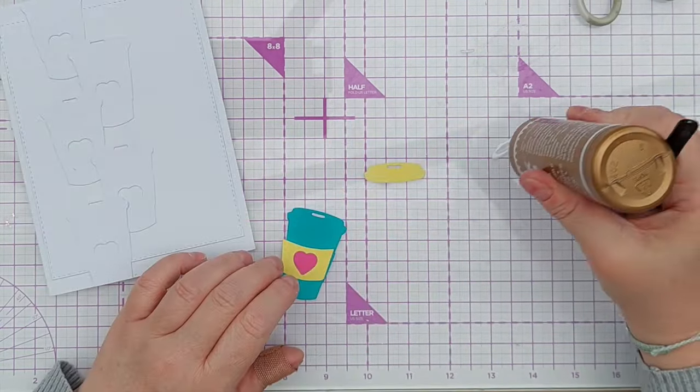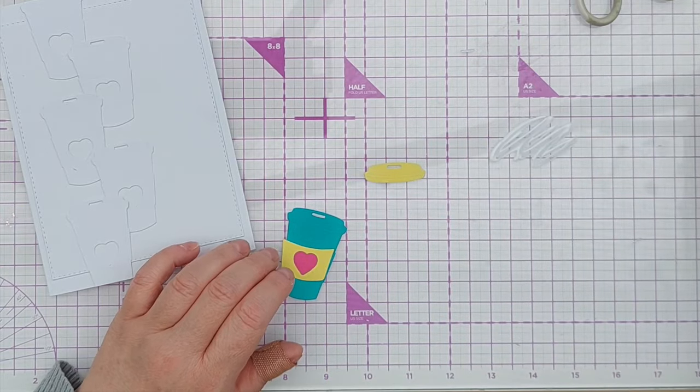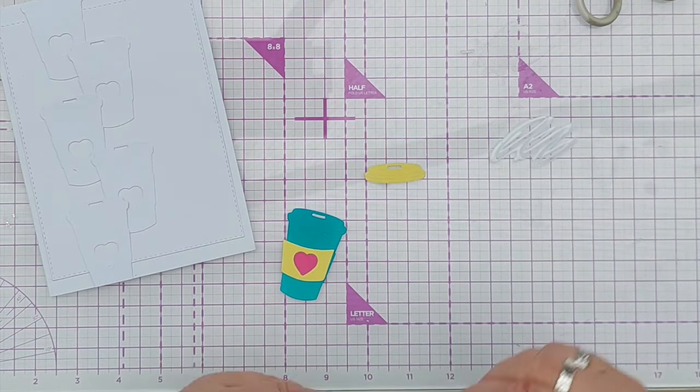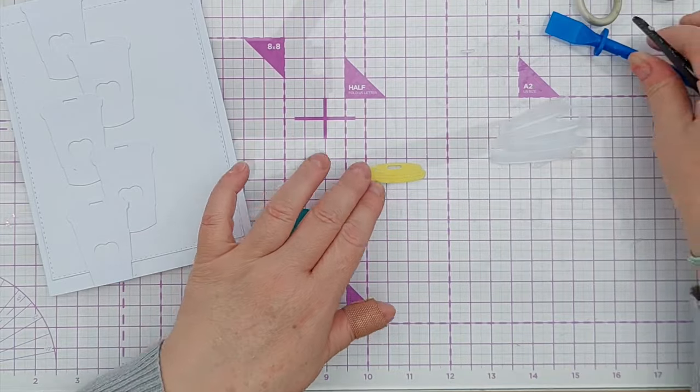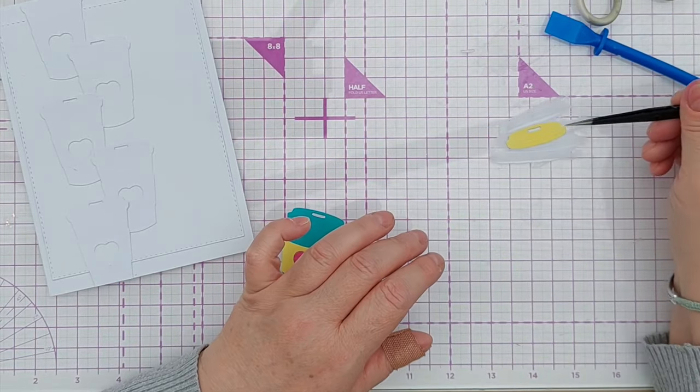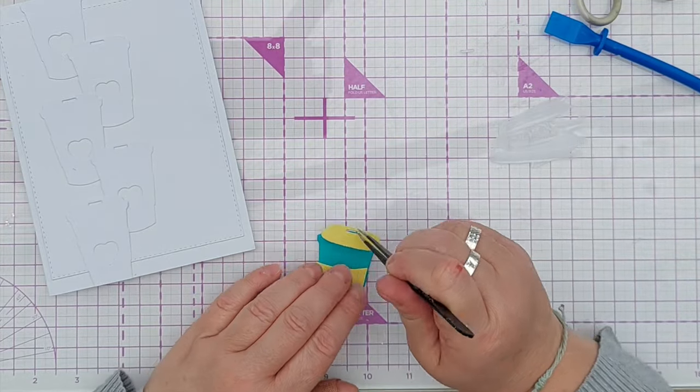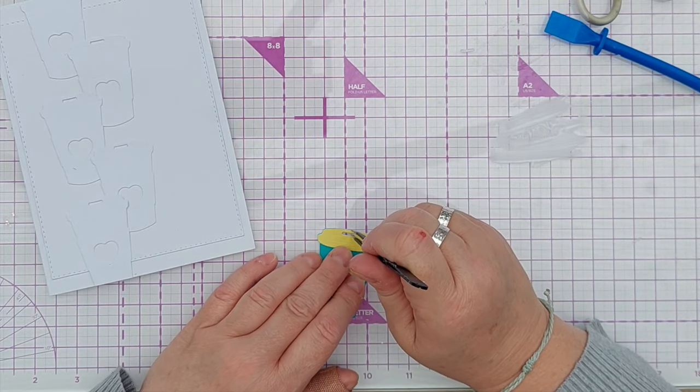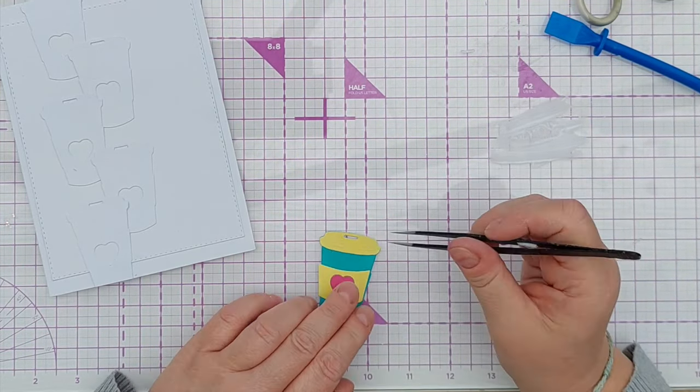To get these stuck together, just put a bit of glue on my mat, spread it out, put that in, and then lift it up and pop it on and knock it together with my tweezers.